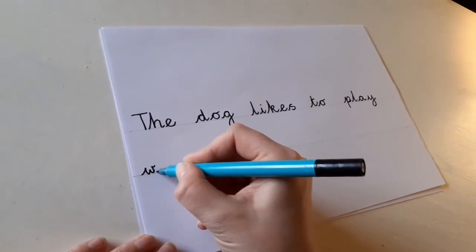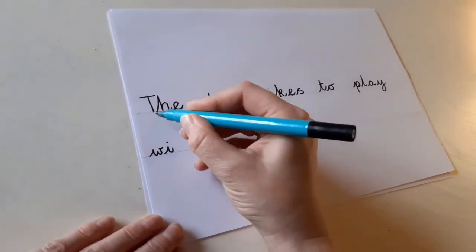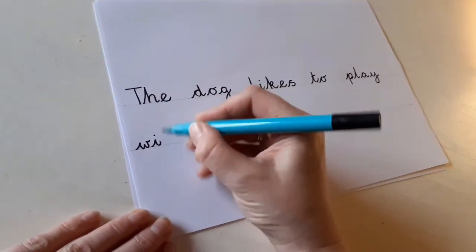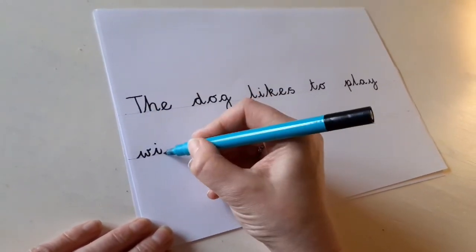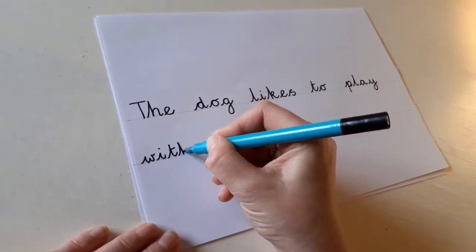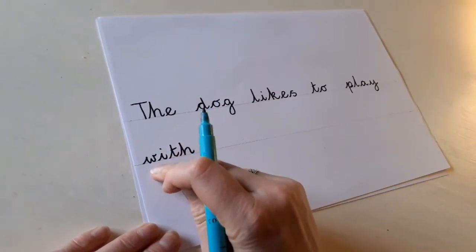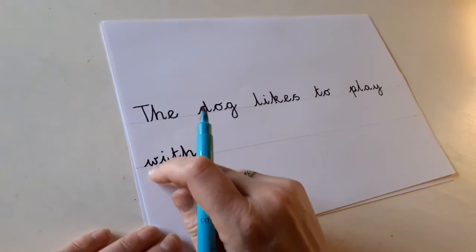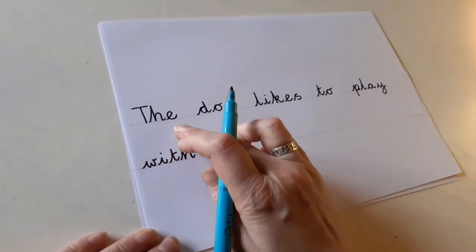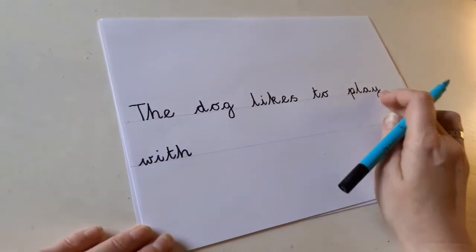W, i. Now, we need a th, like the th in 'the.' But obviously, it's a lowercase t because it's not the start of a sentence. We don't do a capital there because it's carrying on the same sentence. It's not a new sentence, just a new line. The dog likes to play with.